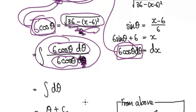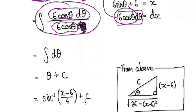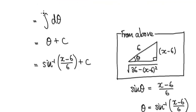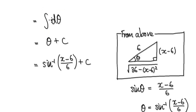So that will then take us to here. Now the 6 will cancel out — the two 6's will cancel out. Cosine will cancel out. So it's really 1 d theta. The whole thing here will then take you to here. Now integrate this, that will give you theta plus c.